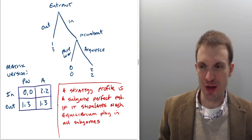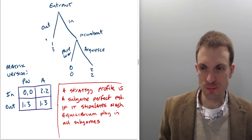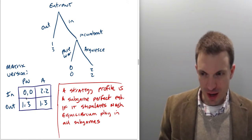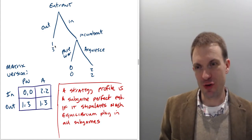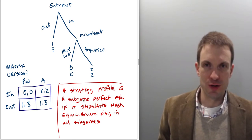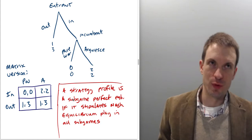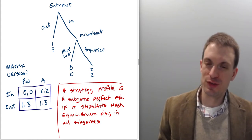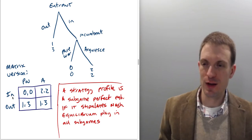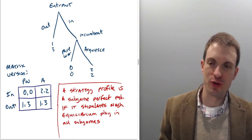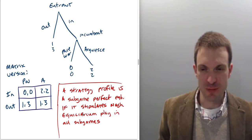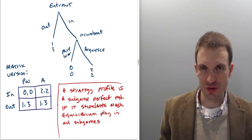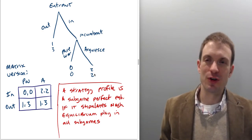To solve this by sub-game perfect Nash equilibrium, first I'll rewrite this game in matrix form. Note: in matrix form, the first payoff goes to the row player and the second to the column player. In sub-game perfect Nash equilibrium, a strategy profile — such as 'in, price war' or 'out, acquiesce' — is a SPNE if it stipulates Nash equilibrium play in all sub-games.